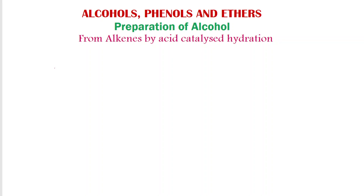Hello students, welcome to PSZ chemistry channel for easy learning. Today we are going to deal with the topic preparation of alcohol from alkenes by acid catalyzed hydration. There are two methods of preparation of alcohols from alkenes: one is by acid catalyzed hydration and the other one is by hydroboration oxidation. In this video we are going to discuss about the preparation of alcohol from alkenes by acid catalyzed hydration.